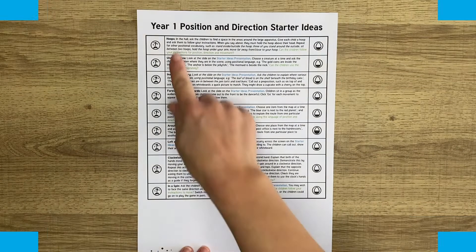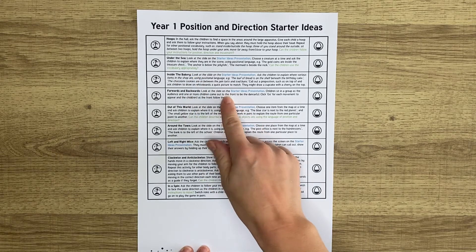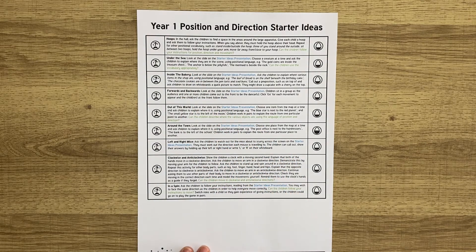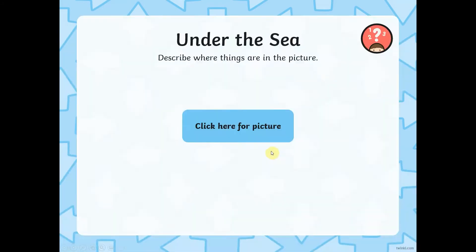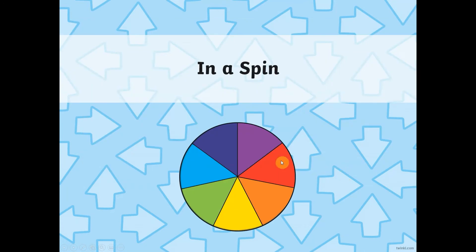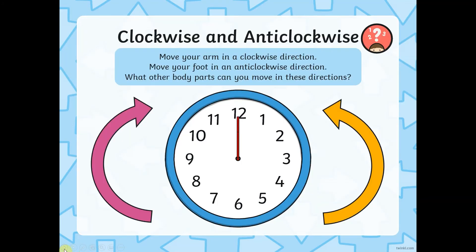We also have lots of packs of starter ideas to accompany the Planet Maths lesson packs. This enables you to pick and choose a little activity that you could use at the start of a lesson, or just as and when you feel you could do a little mathematical activity. They come on an A4 piece of paper to print off, or as a PowerPoint presentation with interactive activities.